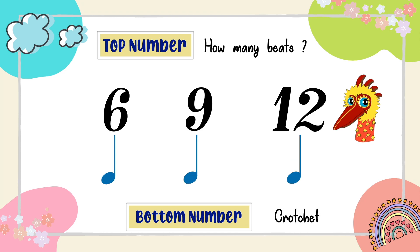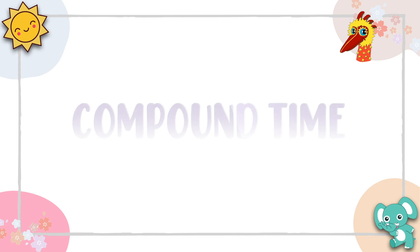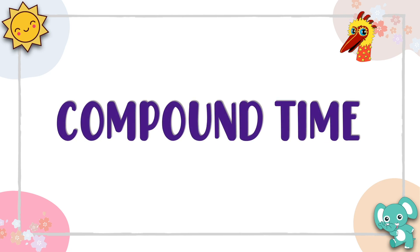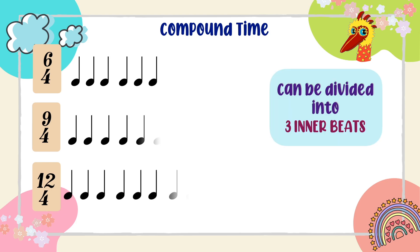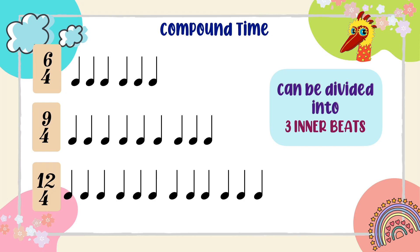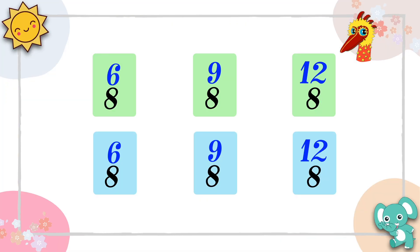That's right, Ruby. But teacher, why are they compound time signatures? 6/4, 9/4, and 12/4 are compound time signatures because they are time signatures where each beat can be divided into three inner beats. Any time signature with a top number of 6, 9, 12, and so on — according to the multiples of three — is a compound time signature.